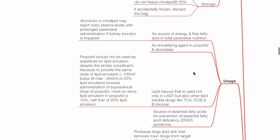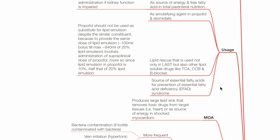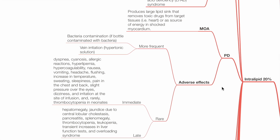Usage of intralipid: as a source of energy and free fatty acids in TPN, as an emulsifying agent in propofol and etomidate, as lipid rescue used not only in LAST but also for other lipid-soluble drugs such as tricyclic antidepressants, calcium channel blockers and beta blockers, and as a source of essential fatty acids to prevent essential fatty acid deficiency. Mechanism of action: it produces a large lipid sink that removes toxic drugs from target tissues such as the heart, or acts as a source of energy in a shocked myocardium.